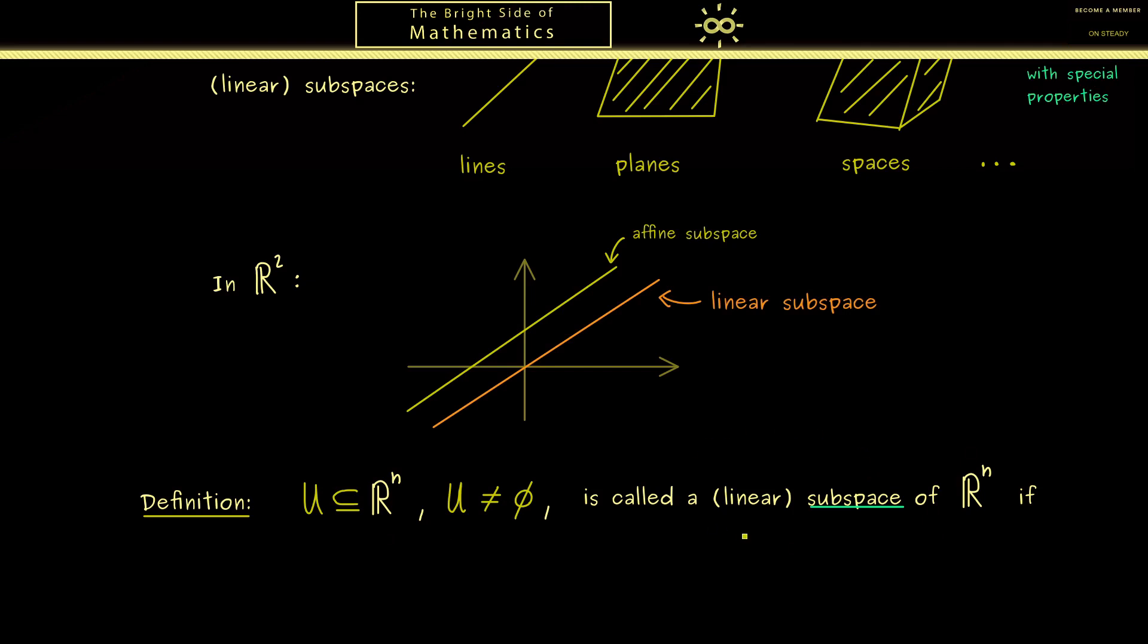Therefore please recall in Rⁿ we only have two operations. We can scale vectors and we can add them. This means now when we do the same thing in U we should get back a vector in U. And in fact this is what we can describe with linear combinations. More precisely this means if we form a linear combination with vectors in U, the resulting vector is still a vector in U.